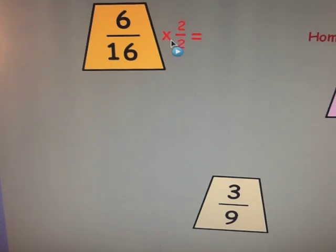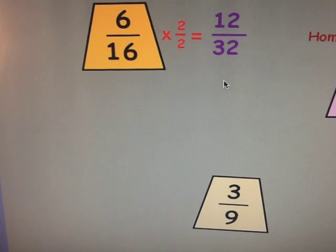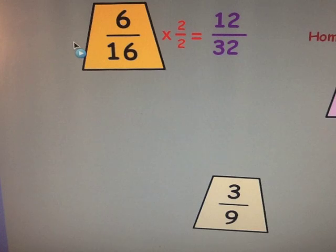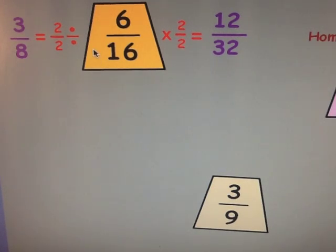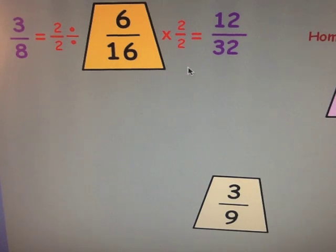Starting with six-sixteenths, I'm going to multiply both the numerator and the denominator by two. Six times two is twelve, and sixteen times two is thirty-two. Now I don't have to just multiply — I can also divide by a common factor. I could divide both six and sixteen by two, and that gives me three-eighths. So three-eighths is also an equivalent fraction to six-sixteenths. You could also multiply by another number, say seven over seven.